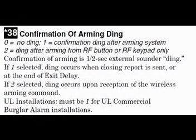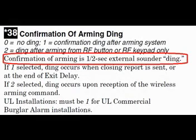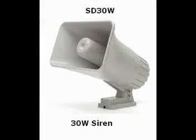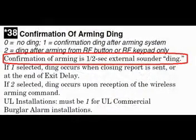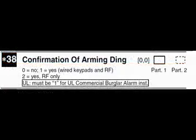The next command requires a little explaining — field 38, Confirmation of Arming Ding. The name 'Arming Ding' makes it sound like a gentle command, but when you read the fine print, the whole world is going to know you armed your alarm. At the end of the countdown, your external siren is going to blast away for half a second. This command is only active during the away mode — it's like the chirper on your car. Lock the car from outside and it chirps; lock from inside and you don't hear any chirp. By default, this command is off.